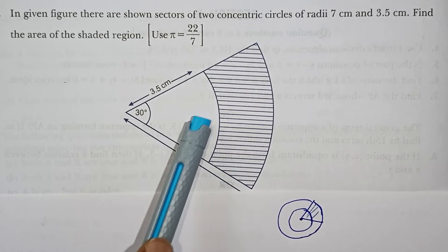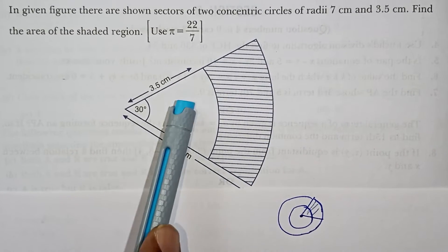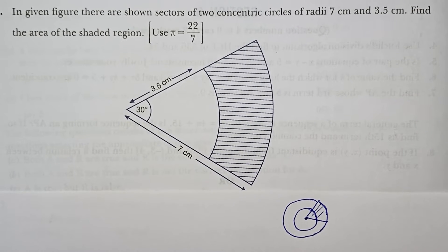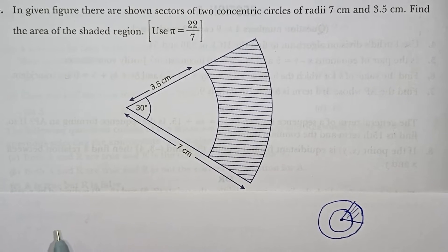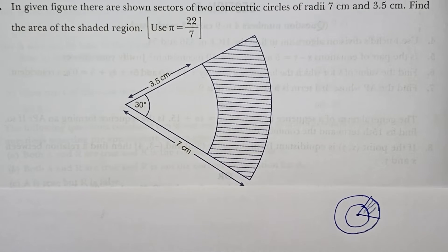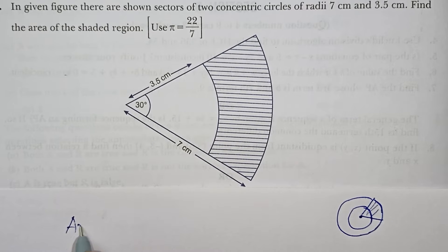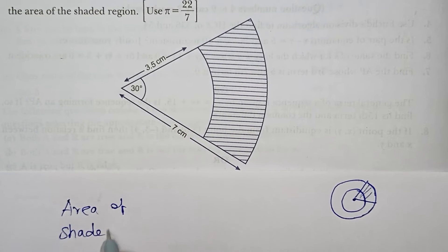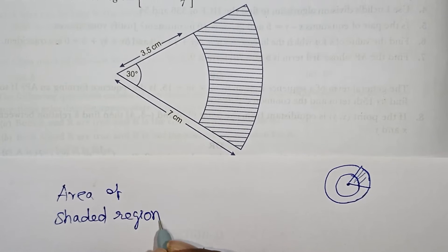What is the shaded region? The green sector is the small sector. It is subtracted from the big sector area. We will find the area of the shaded region. Let us calculate the area of the shaded region.